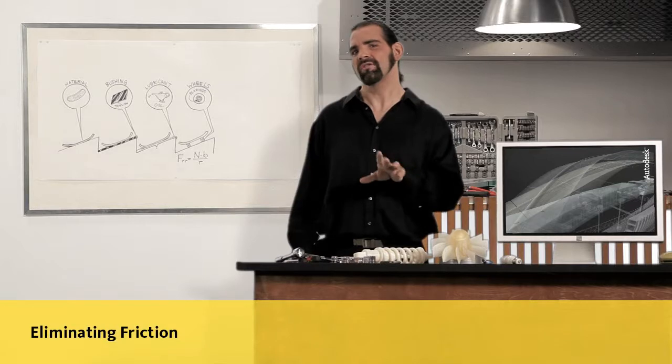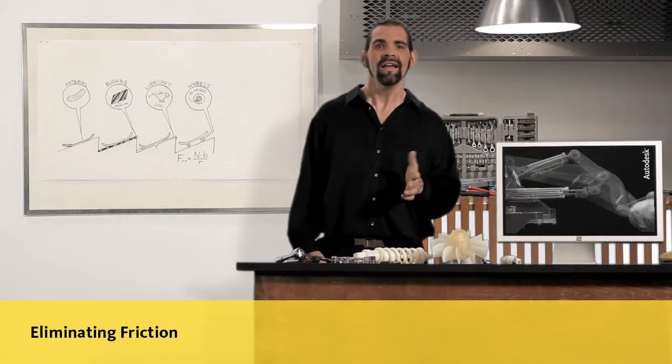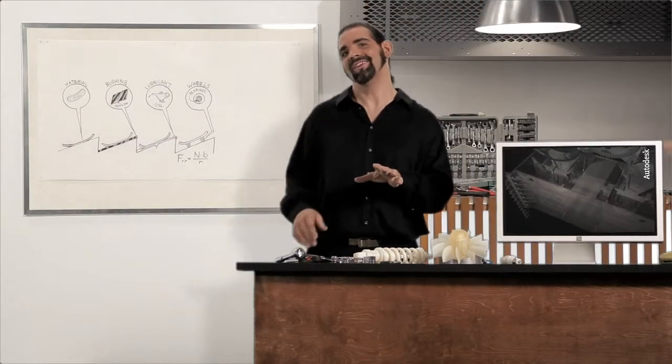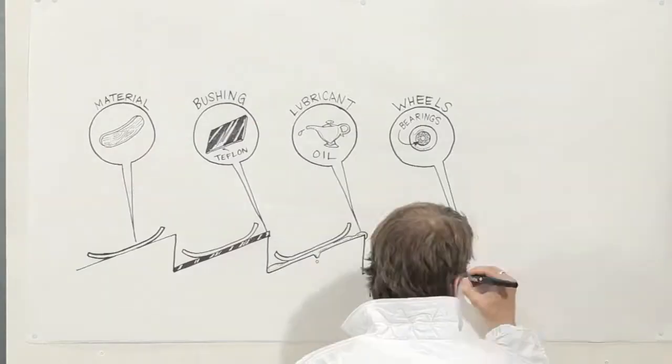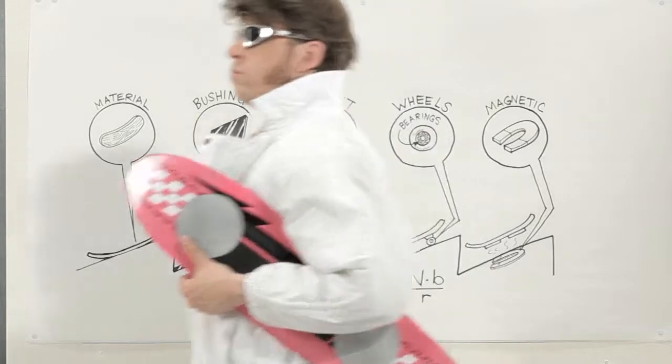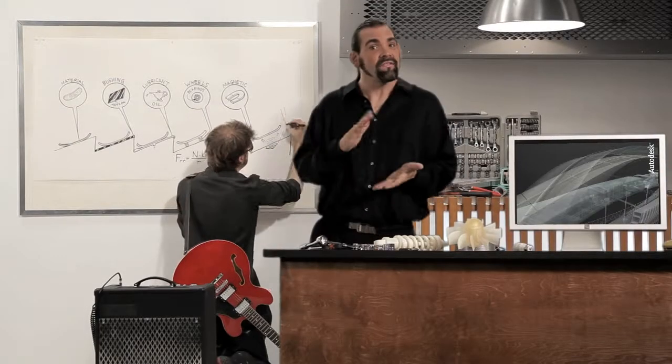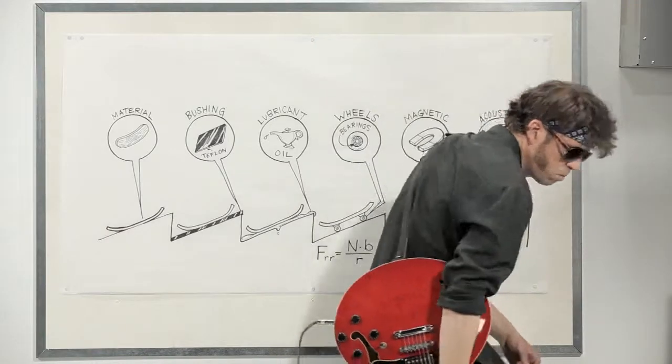The only way to eliminate unwanted friction entirely is to make sure that parts don't touch each other at all. You'll see this in trains that use magnetic levitation. Acoustic lubrication does this by lifting an object a tiny bit over and over.